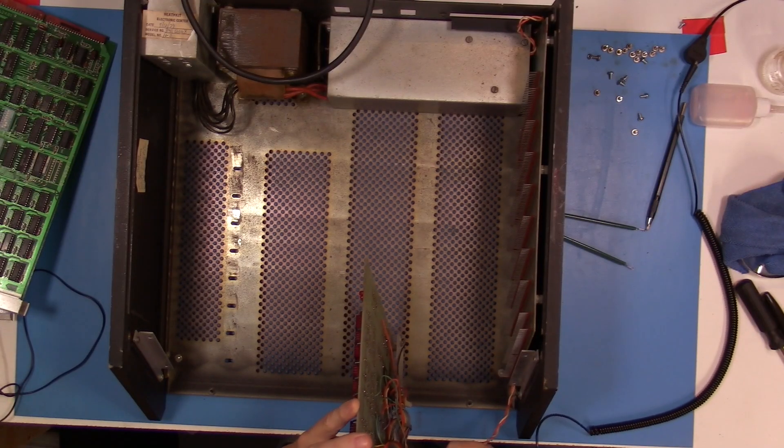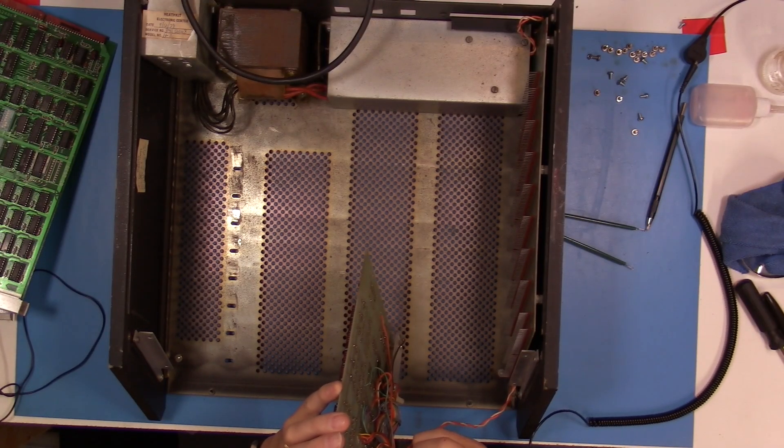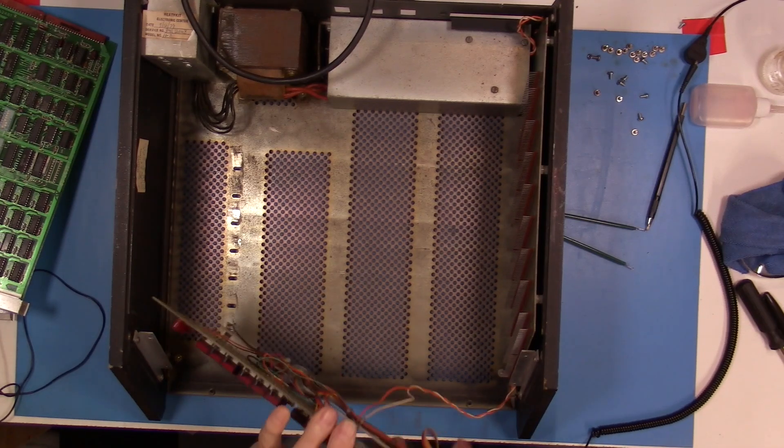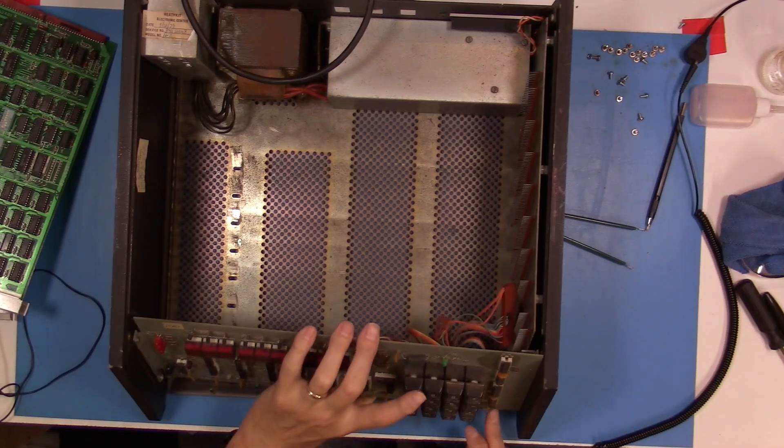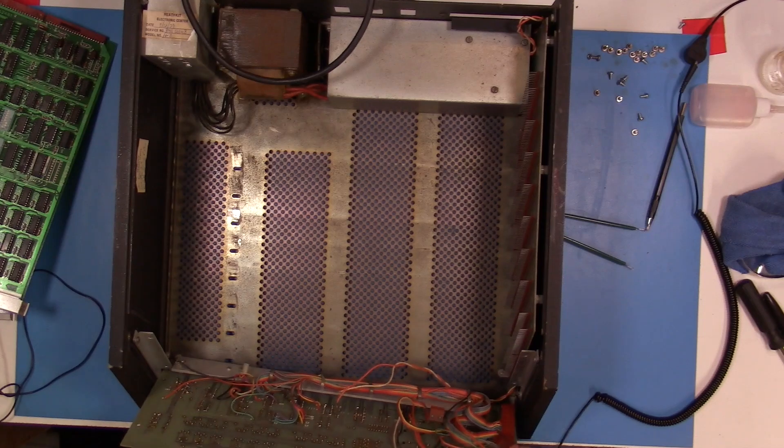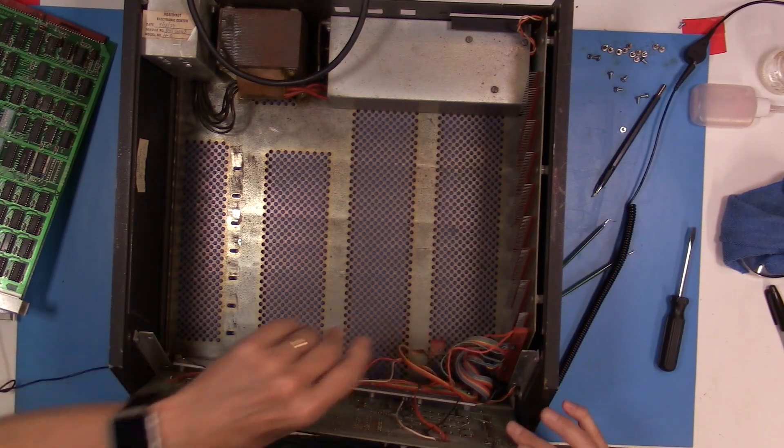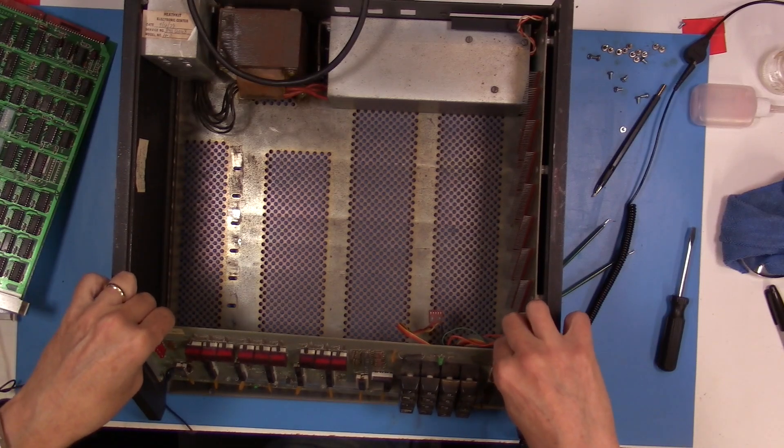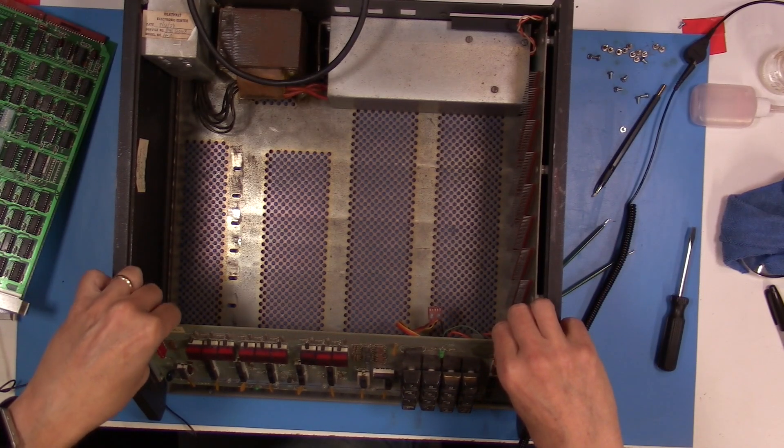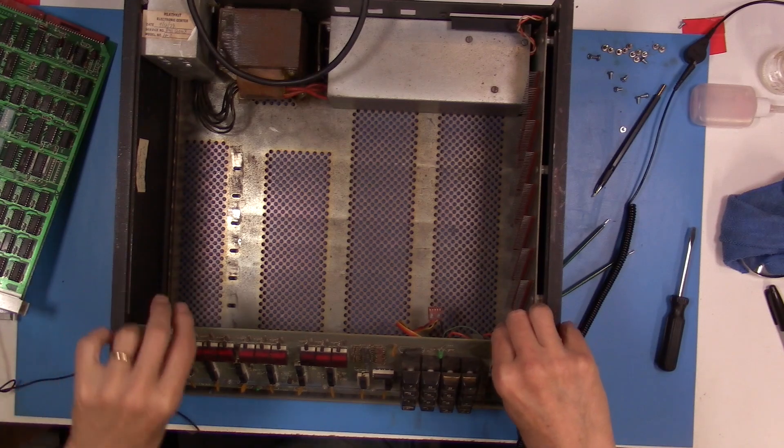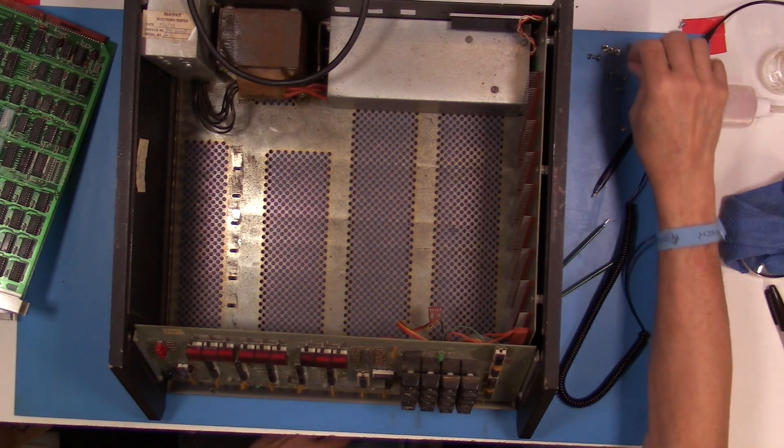The process I decided to do in reassembling the system was to follow the steps in the Heathkit assembly manual. So I'm going through those original steps of doing the checks that they suggest in the manual and then installing the cards one at a time.